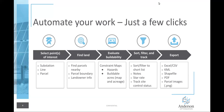Hi, this is Peyton with Anderson Optimization, and I'm just going to walk you through how to create a siting project in the software AO. Here's a layout of the general workflow of your project. The first step is to select a point of interest, whether it be a substation or a line that you want to search for land around, or if you already have a parcel in mind that you want to analyze. Three different points of interest to start with.